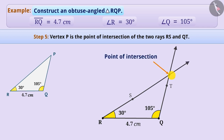In this way, we obtained an obtuse angle triangle RQP, where the length of RQ is 4.7 cm, angle R measures 30 degrees and angle Q measures 105 degrees.